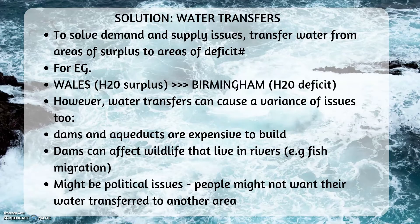However, water transfers can cause a variety of issues too. Dams and aqueducts are too expensive to build. They can affect wildlife that live in rivers. And there might be political issues — for example, people might not want their water transferred to another area.